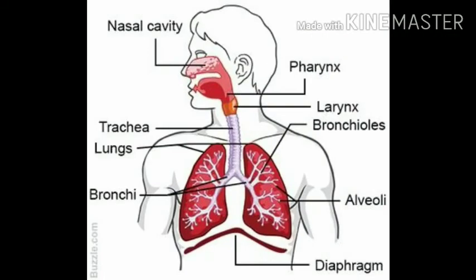Now we are going to study the different parts of the respiratory system — nose, pharynx, larynx, trachea, and others. With the help of a diagram, we are going to study each part. This is how the respiratory system looks, and these are the organs involved in it.